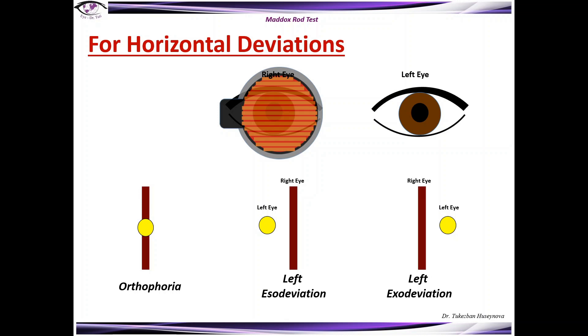When we say here for example the light is on the right side and this is a left esodeviation, this is in relation to the right eye because you can also describe it the way that the right eye is exodeviated in relation to the left eye.